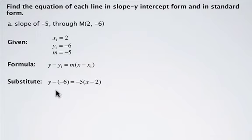So when we simplify, the left side simplifies to y plus 6, and when we distribute the negative 5 through the bracket, it becomes negative 5x plus 10. Watch your signs.